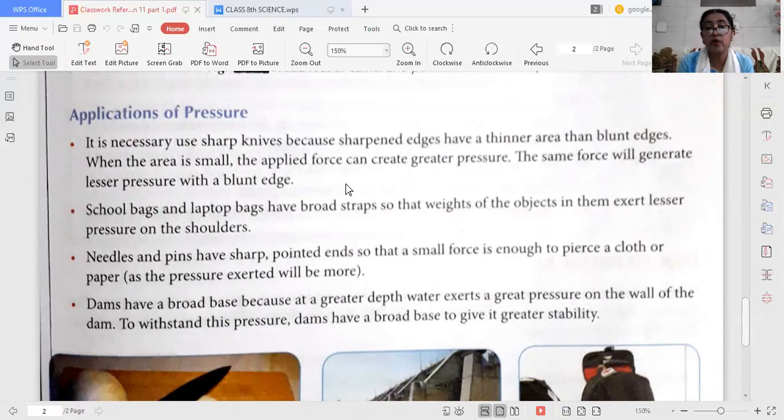It's very important when we cut anything. We always check whether the edge of the knife is sharp or blunt. Because if it is sharp, it has a small area and the applied force can create greater pressure. But if the edge is blunt, the surface area increases, so the force will generate lesser pressure.